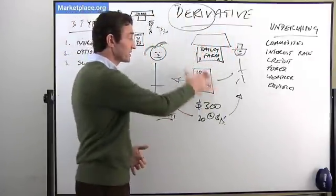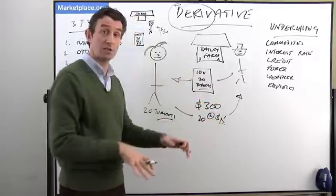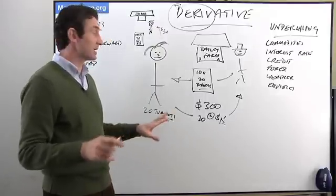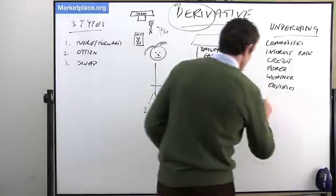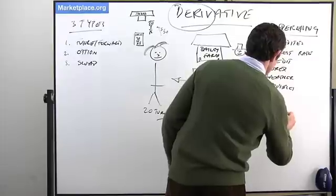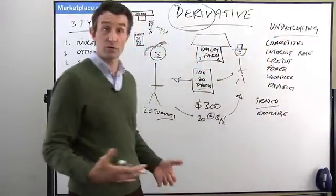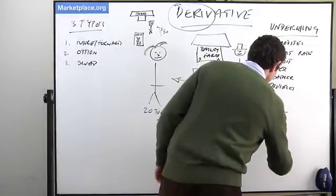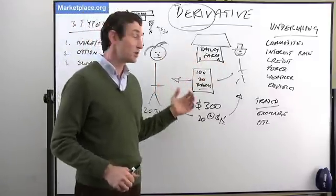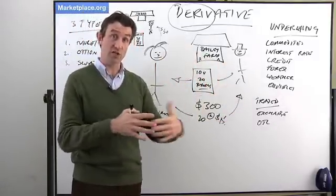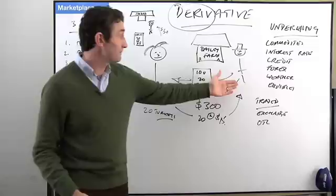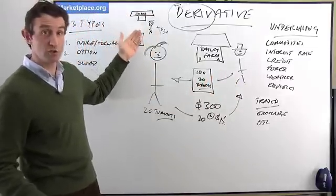Essentially, all a derivative is is a contract written based on the underlying. And here's the great thing about derivatives — because of this contract, you can trade them. Derivatives are traded in two places: either traded on an exchange — like the exchanges in Japan, or the S&P 500, any of these exchanges — or they can be traded over the counter. The over-the-counter case is whenever it's an agreement between one person and another. In an exchange, you use the exchange to trade through, and you can see the price listed. In an over-the-counter market, it's just an agreement — in this case, an agreement between Terry and Mr. Bailey, or between Terry and Mr. Jones.